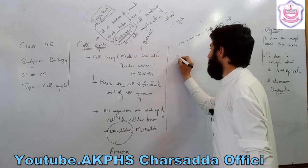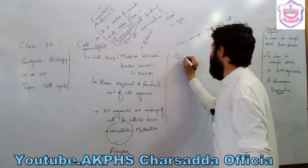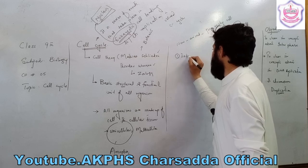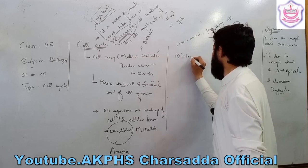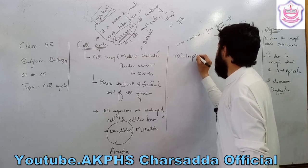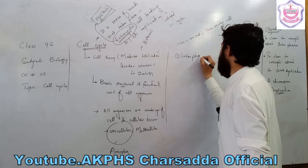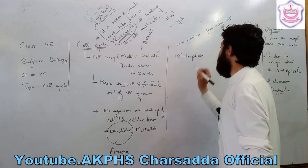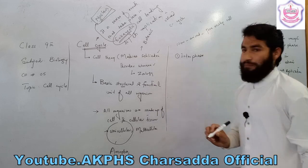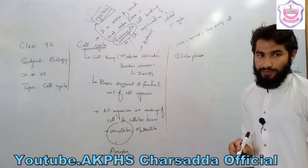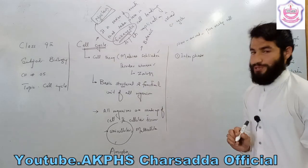The cell cycle is completed in two phases. The first phase is the interphase and the second phase is the division phase.